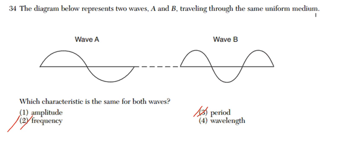So which is it? Amplitude or wavelength? I can look at the amplitude here. That's the height from the zero line. I can see that's the same.